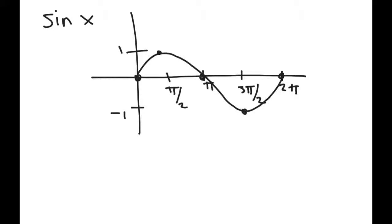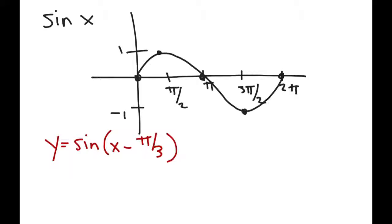Let's start with one period of our general sine graph and talk about how phase shifts are going to work. Let's start by talking about y equals the sine of (x minus π/3). First of all, the amplitude is still 1 because the number in front of sine is 1. The period is still going to be 2π because k is 1 and 2π over 1 is 2π. So the only thing being done to this graph is a phase shift. b is π/3.